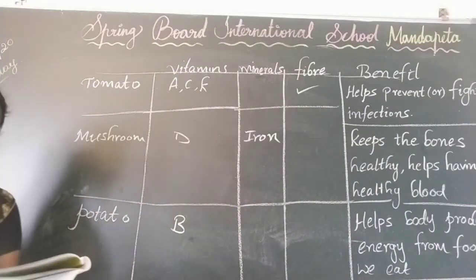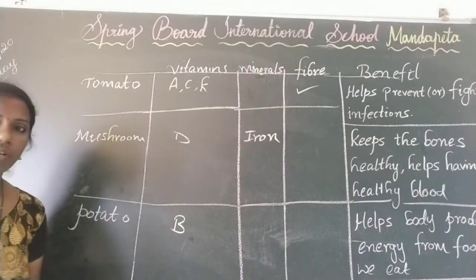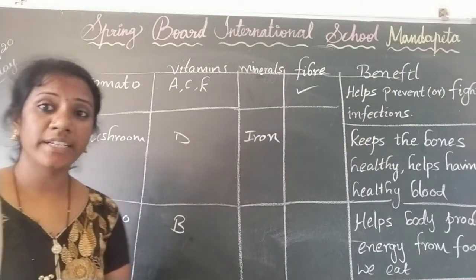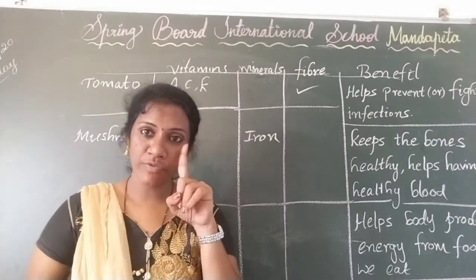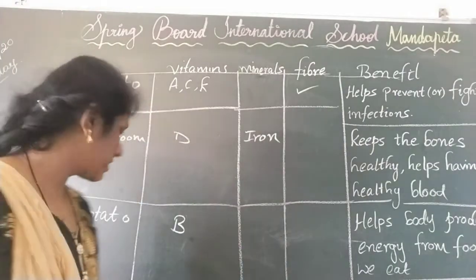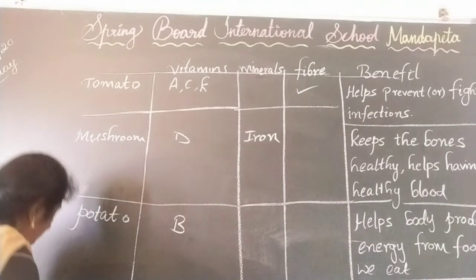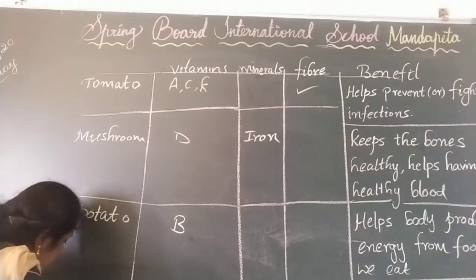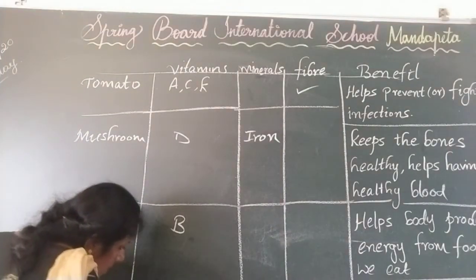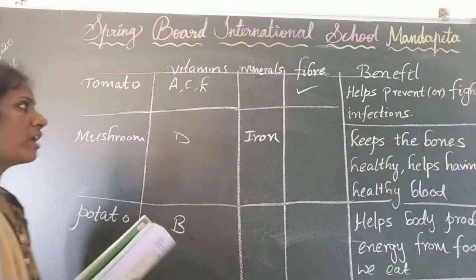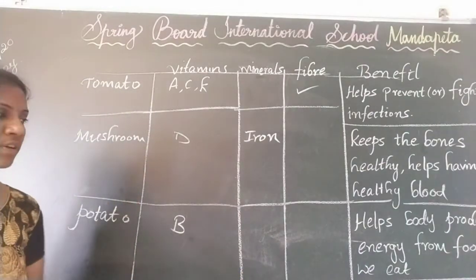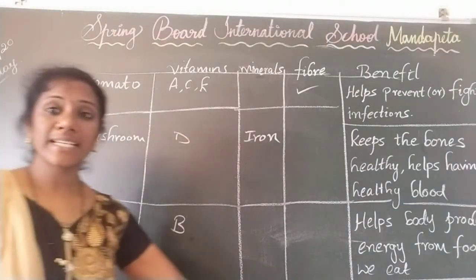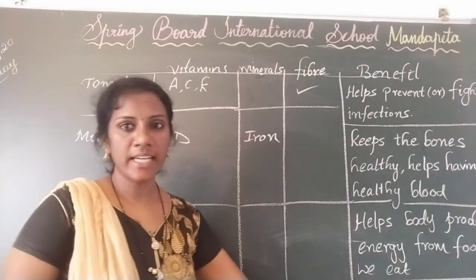Next, carrot. Already you know carrot has vitamin A. It is very good for our eyes. Carrot has vitamin A, and fiber, so it can help us see clearly.